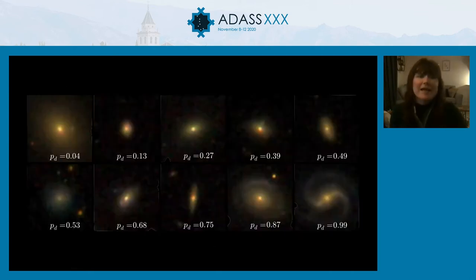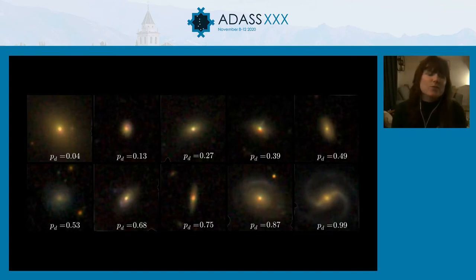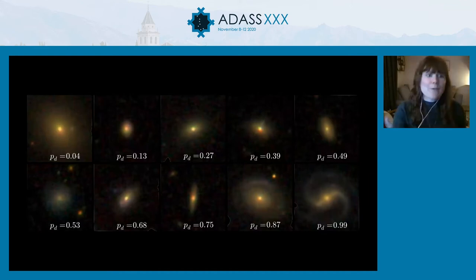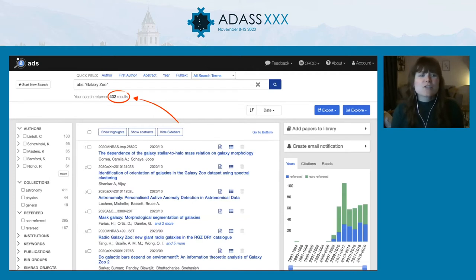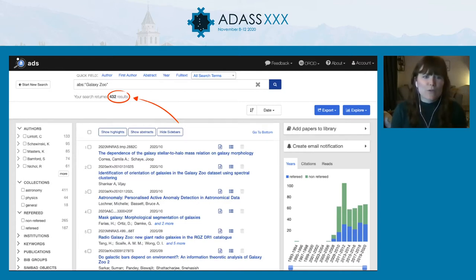What Galaxy Zoo gives you is a vote fraction — the percentage of people who said a specific galaxy was a disk, a bar, a merger, or something like that. It gives us a nice database that we can use to pull out what we're interested in. As of last week, there are 432 papers on ADS that mention Galaxy Zoo in the abstract, and 1,550 that mention it somewhere in the text, which I think is an incredible number reflecting the impact of having this database publicly available.